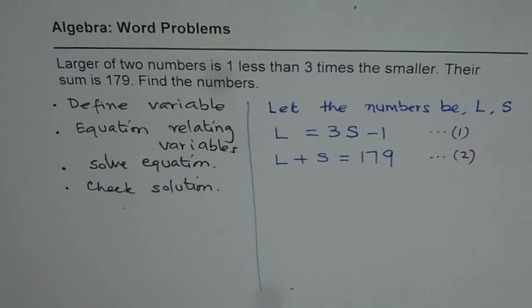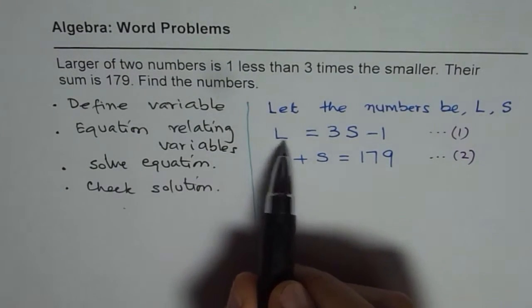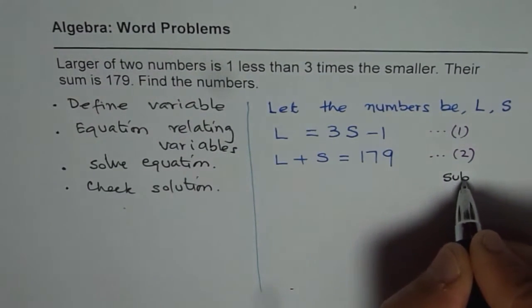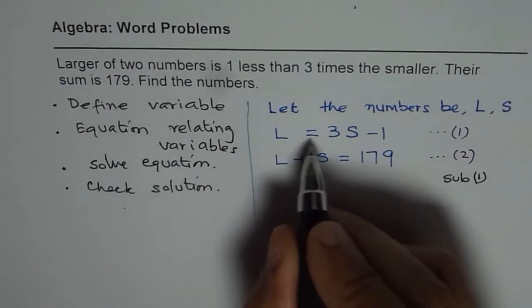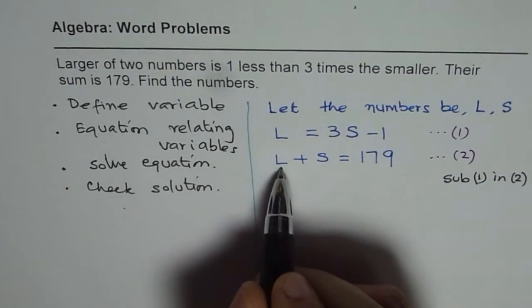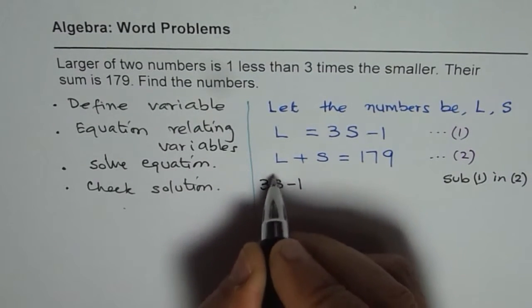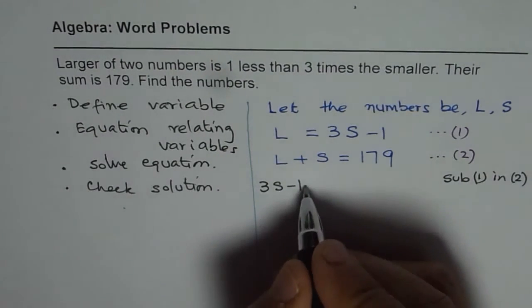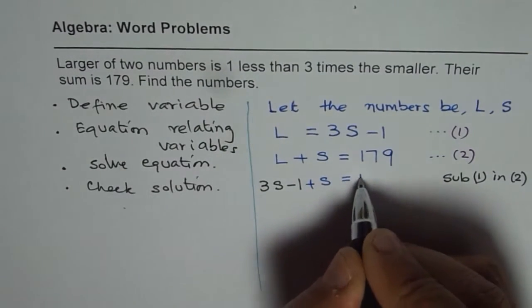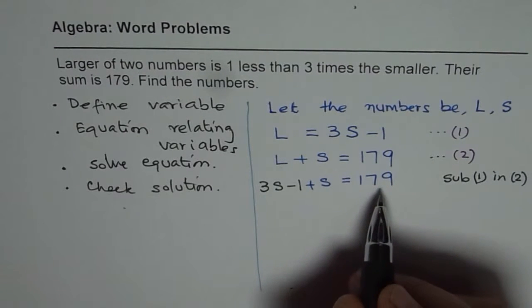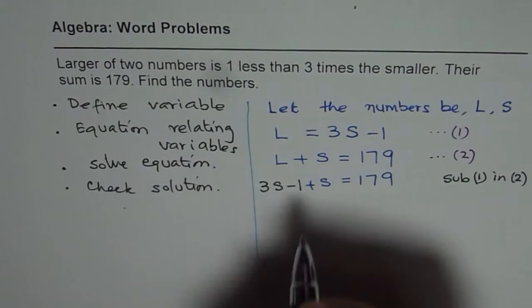We have to actually get just one equation, not two, to solve. So what we can do here is, we know L is related with S, L = 3S - 1. So we can substitute from equation one the value of L in equation two. So instead of L, I'll write 3 times S minus 1. Plus S equals 179. Then we get our equation in one variable, and you can solve for S.